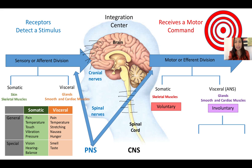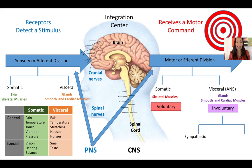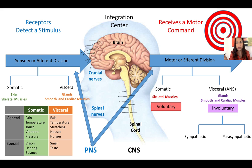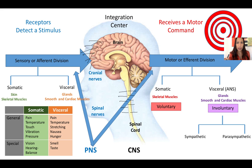The involuntary or visceral motor division of the nervous system is also called the autonomic nervous system. It is called autonomic because the contraction of these muscles is kind of automatic — we will describe that in detail later. The autonomic nervous system includes two branches: the sympathetic, which creates a level of alert — increases alertness, rushes blood to the muscles, increases heart rate and respiratory rate, making us ready to fight or flight — and the parasympathetic division, which slows everything down when you are relaxing and not ready to fight or flight.